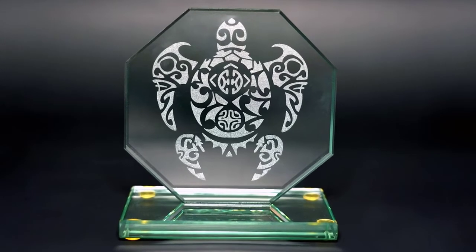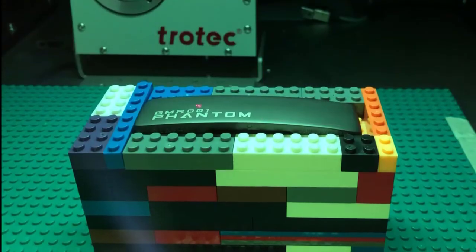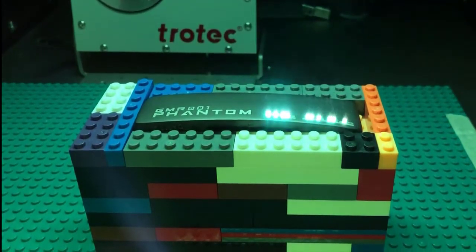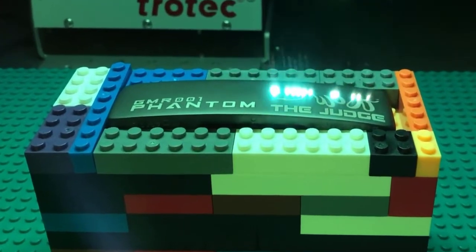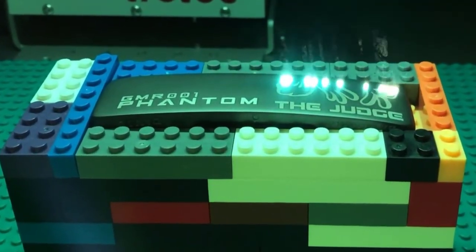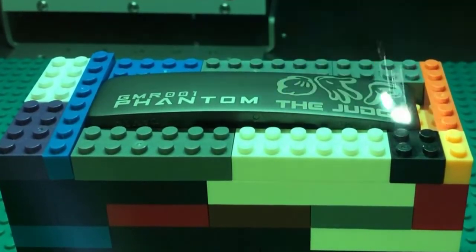This method can be used in flatbed laser machines as shown in the previous example, but can also be used with Galvo fiber lasers as you see here using Lego blocks to hold a golf putter head in place as the fiber laser marks the metal.